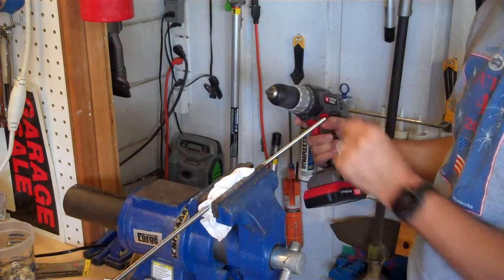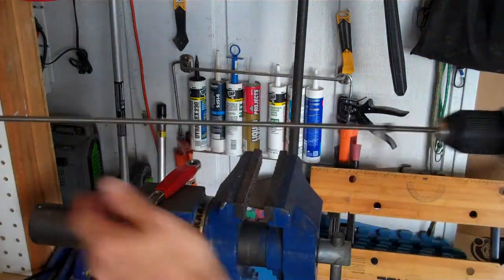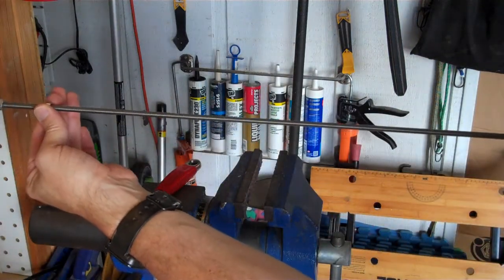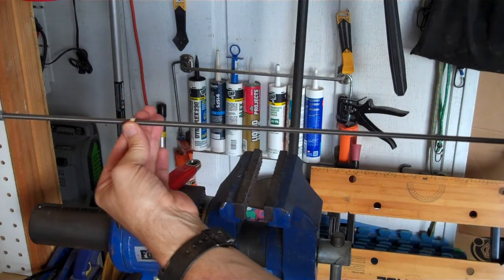The easy way to get a nut along a threaded rod is to chuck the rod in a drill and use the drill to turn the rod inside the nut while you hold the nut. If that's not possible, you can use this trick.